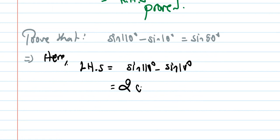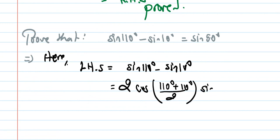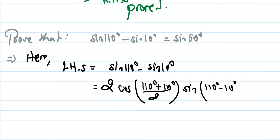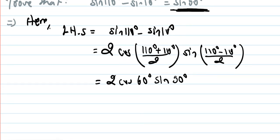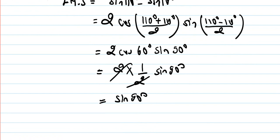Applying the sin A − sin B formula: 2·cos((110° + 10°)/2)·sin((110° − 10°)/2) = 2·cos60°·sin50°. Since cos60° = 1/2, we get 2 × (1/2) × sin50° = sin50° = RHS. Hence proved.